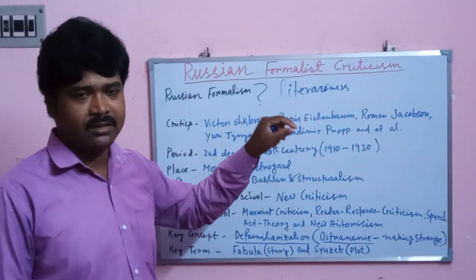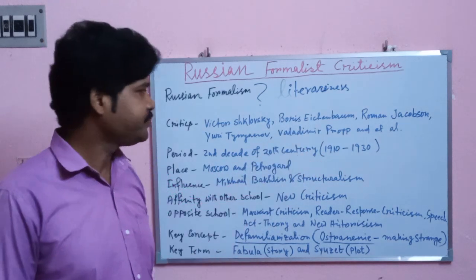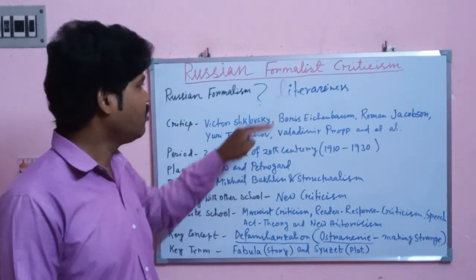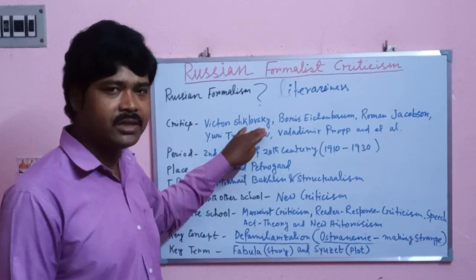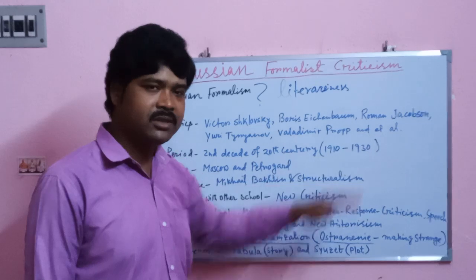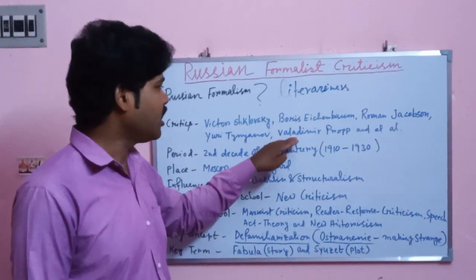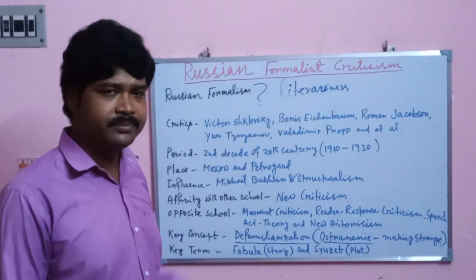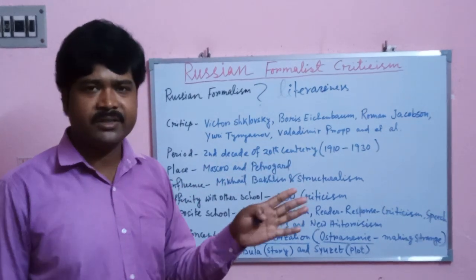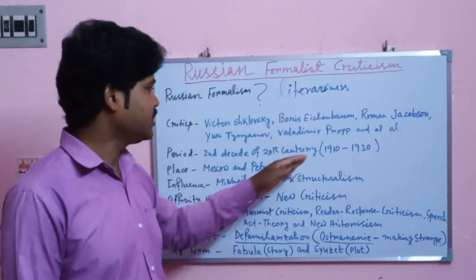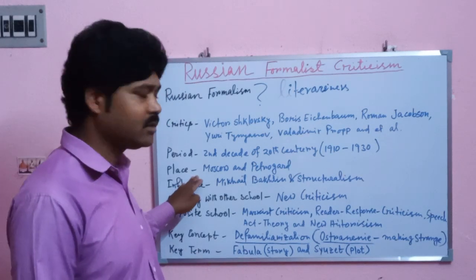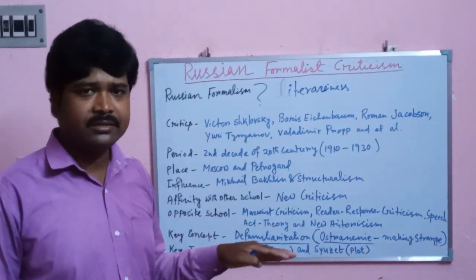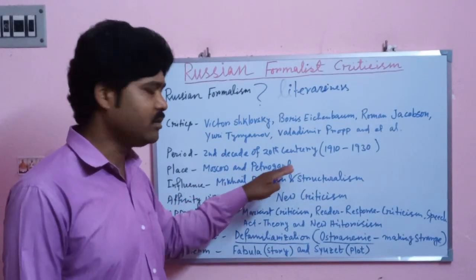The leading critics of this school are Viktor Shklovsky, Boris Eichenbaum, Roman Jakobson, Yuri Tynyanov, Vladimir Propp, and others. The period of Russian Formalism is the second decade of the 20th century — precisely, 1910 to 1930. The place of Russian Formalism: at the initial stage they originated in Moscow and Petrograd, that is St. Petersburg.